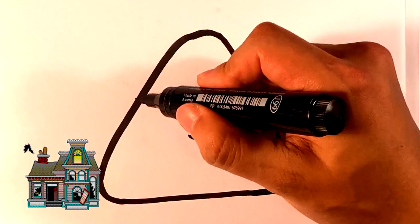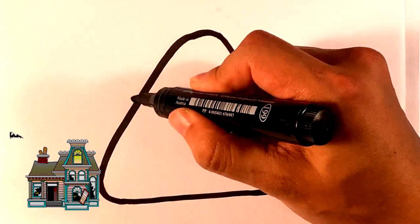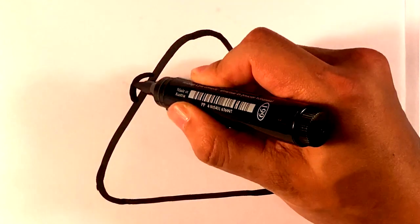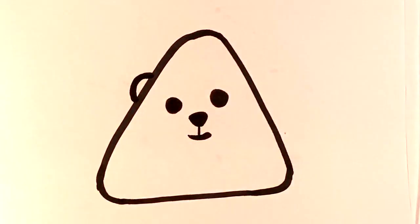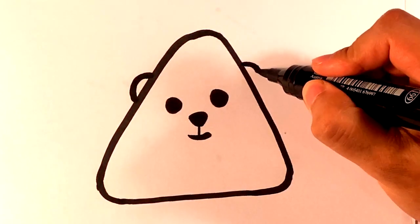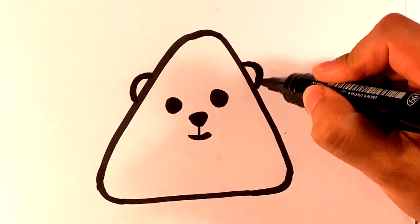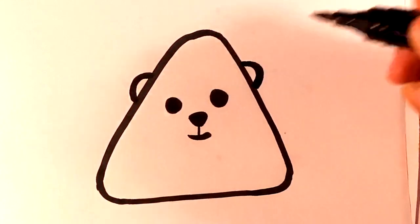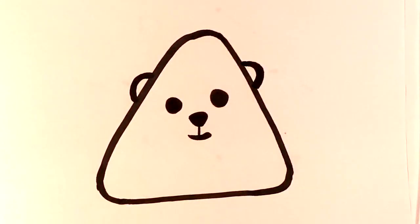Going to go over here to the left. Going to put a teddy bear ear right there. It's a small teddy bear ear. Going over here to the right. I'm going to draw another teddy bear ear. As far as the line art goes, that's good enough for the line art.